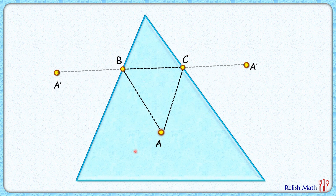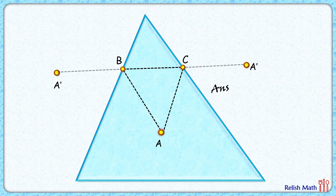So triangle ACB is the required triangle with the minimum possible perimeter, and that's our answer. I hope you enjoyed the solution — see you in the next video!